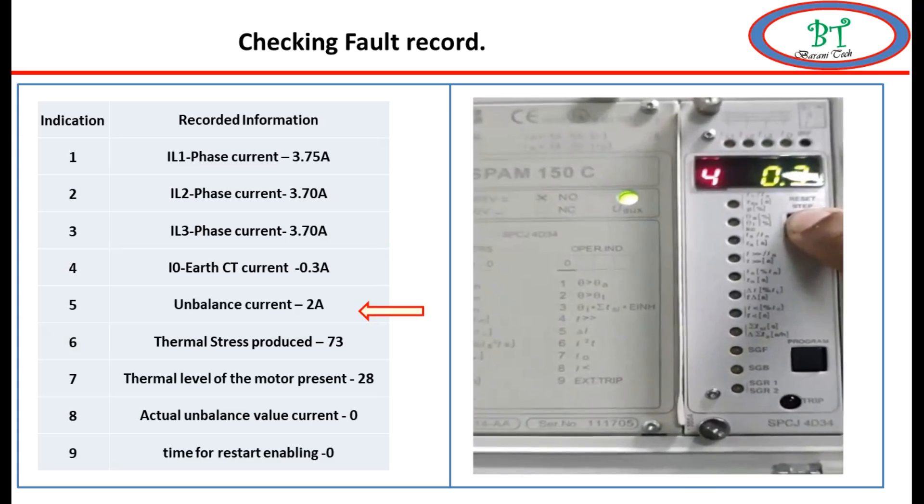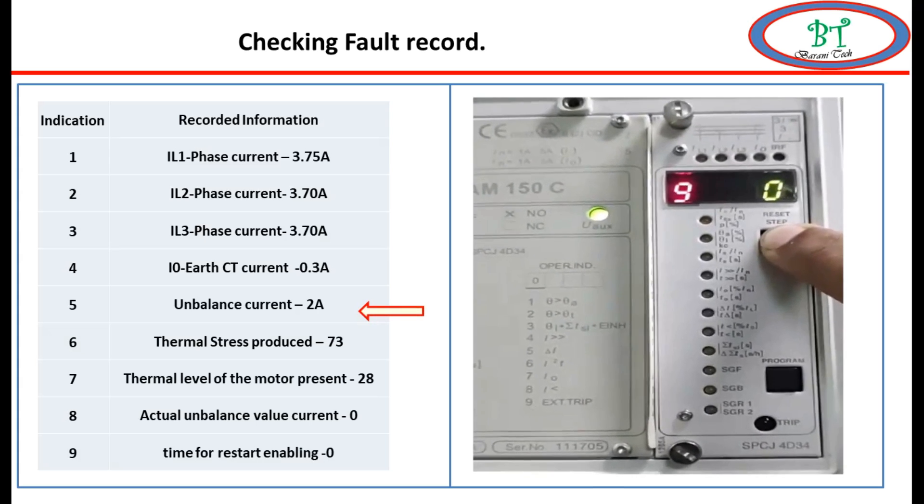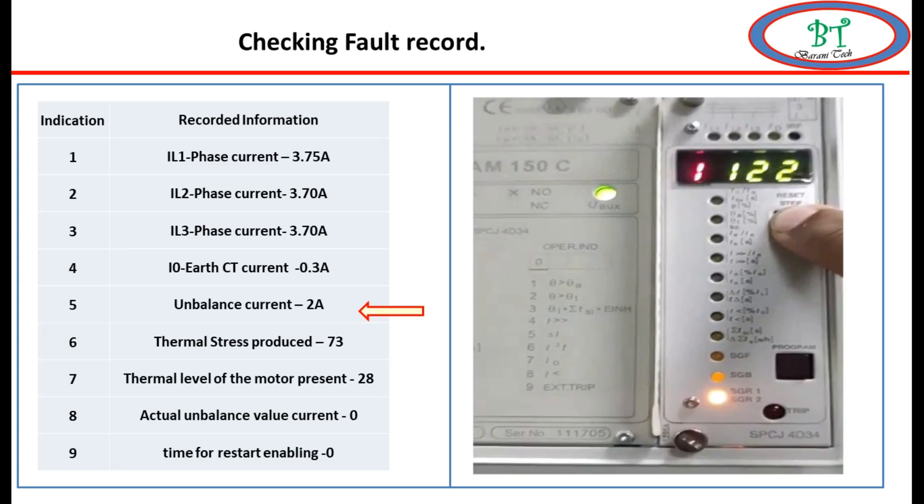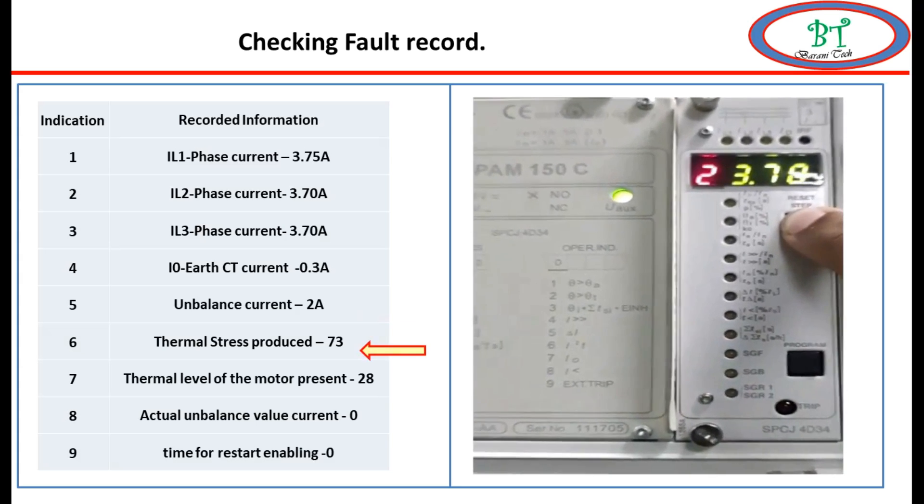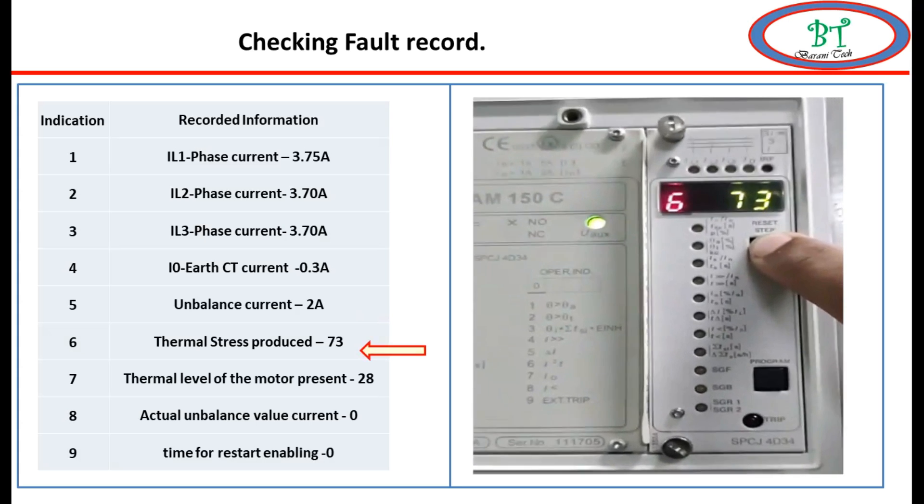Fifth is for unbalanced current. As we set the relay unbalanced current, if it goes beyond the unbalanced current, it will be captured. Sixth is thermal stress produced on the relay. How much thermal stress is produced on the relay we can see on the sixth indication.